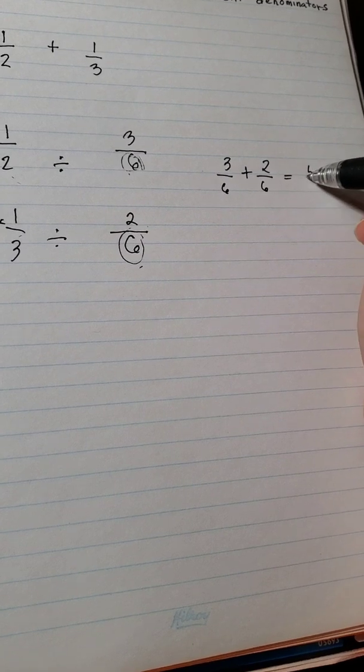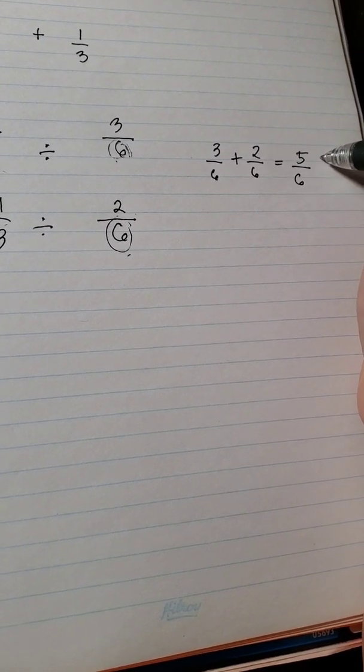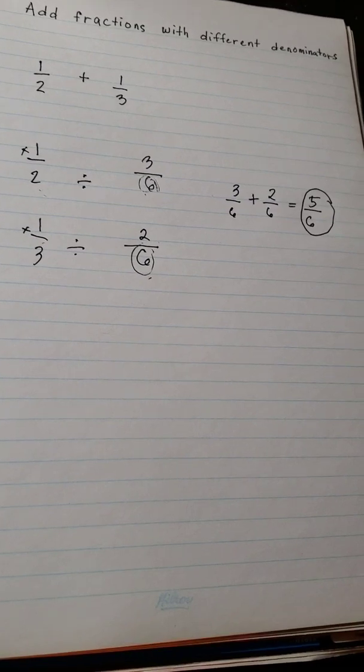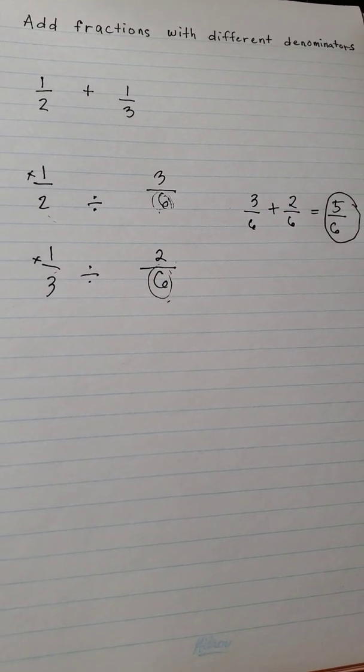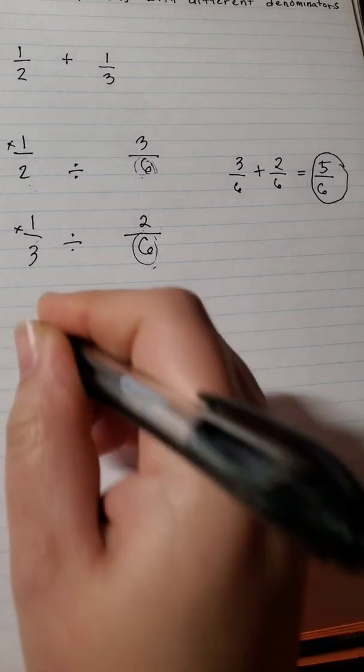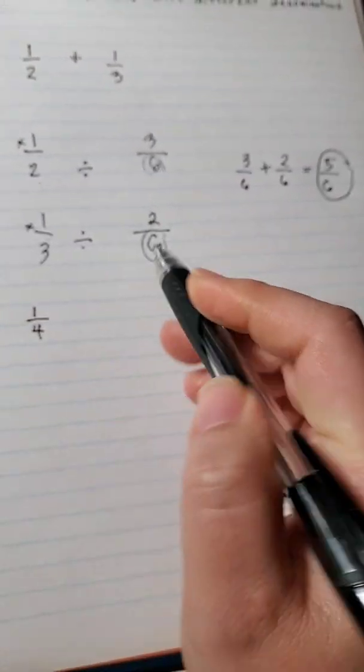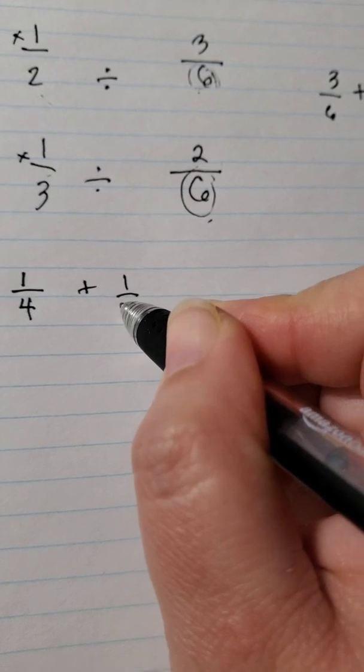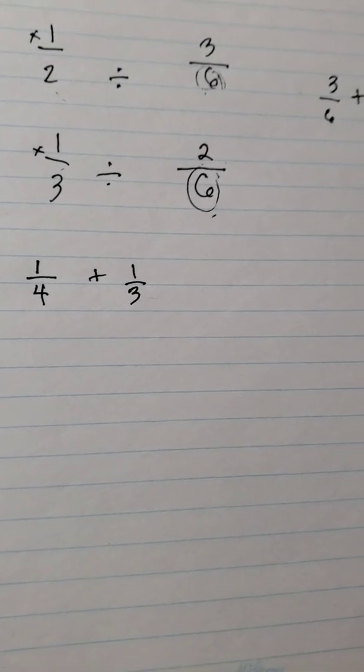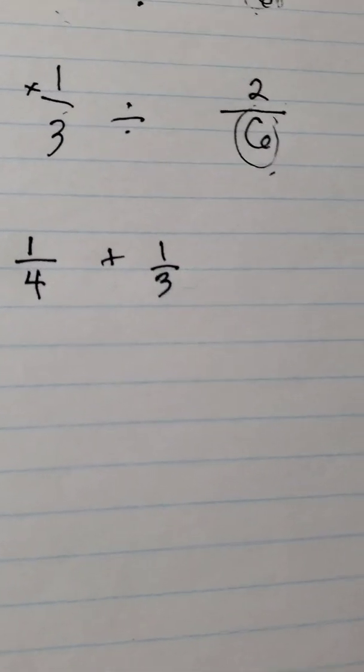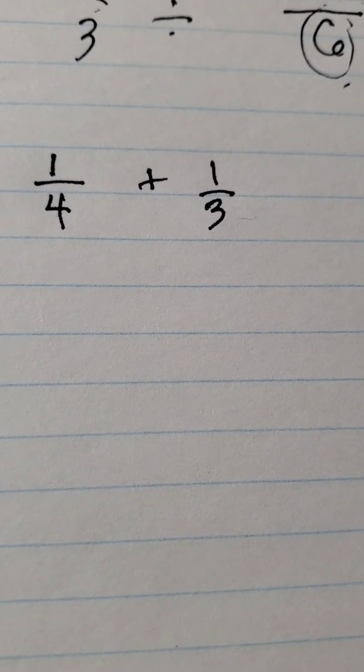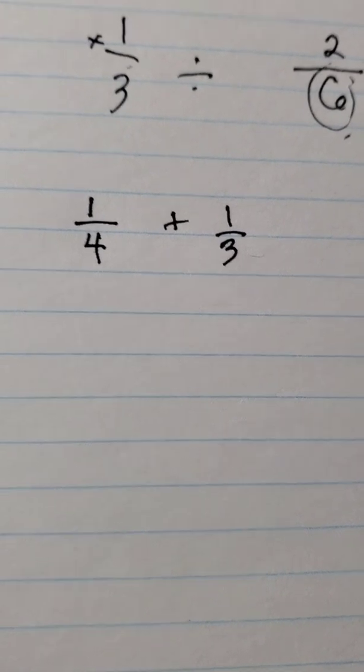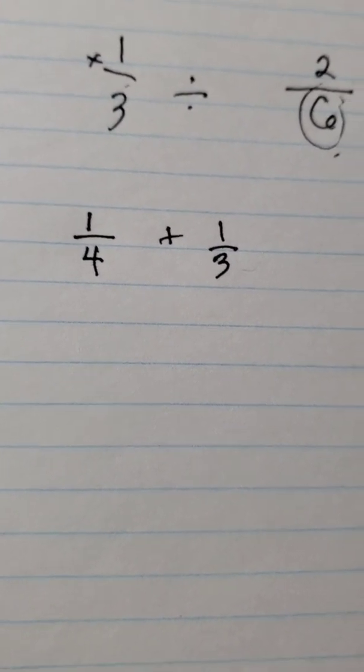Let's try another example: 1 fourth plus 1 third. Okay, so what's the common denominator for this? Let's start with 4. 4 divided by 4 is possible, but 4 divided by 3 is not possible. So what number can divide both?